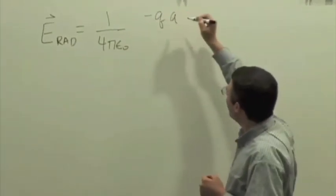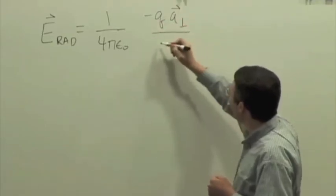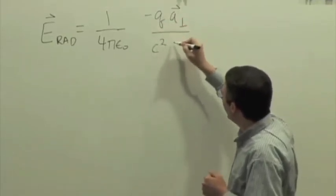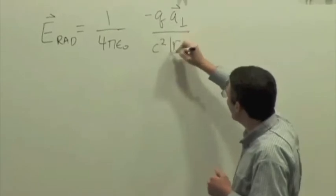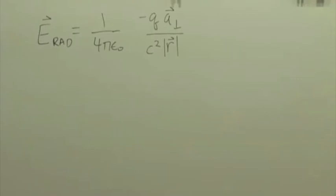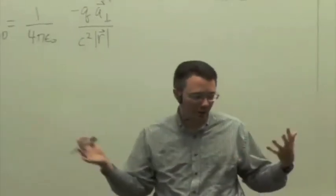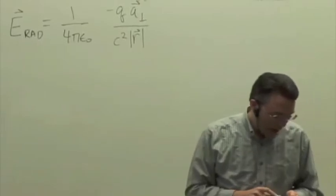So we have this formula: constant 1 over 4 pi epsilon 0 times negative q perpendicular component of acceleration, that's a vector, divided by c squared r. This is the magnitude of the r that points from the source to observation location, which is also the direction of propagation of the emitted radiation.